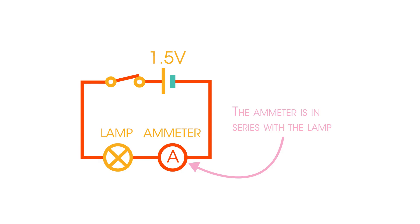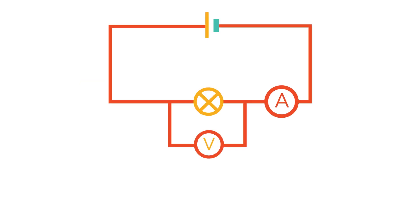What if we wanted to measure both the current and the potential difference? Simply set up a circuit with an ammeter in series and a voltmeter in parallel. Once we've measured the current and the potential difference, we can then use these values and substitute them into our V equals IR equation to find the resistance.